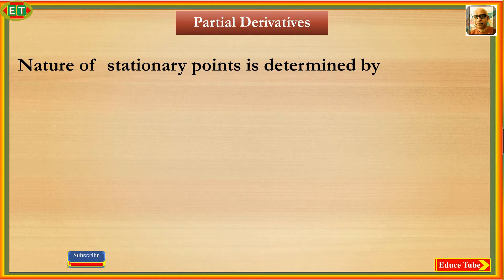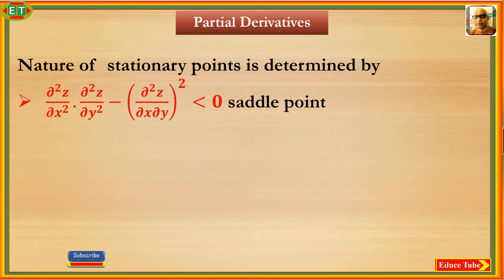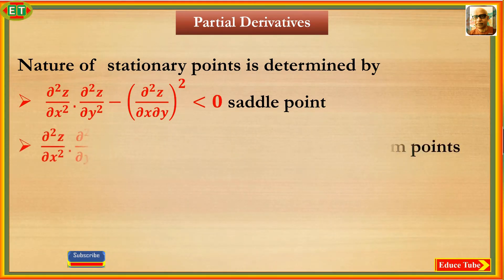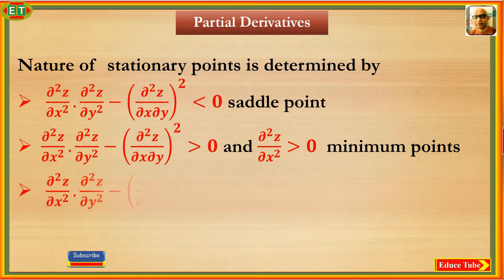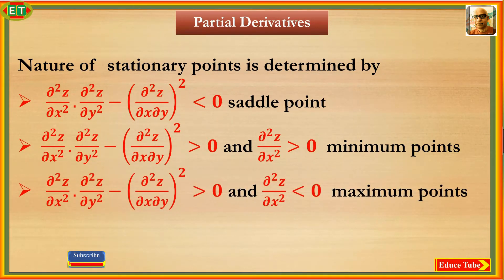The nature of a stationary point is determined by this expression. If the result is negative, the stationary point is a saddle point. If the result is positive and ∂²z/∂x² is also positive, then we have a minimum point. If the result is positive and ∂²z/∂x² is less than zero (negative), then we have a maximum point.